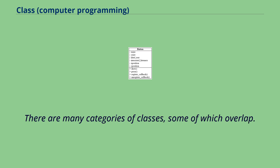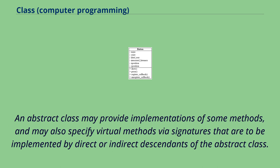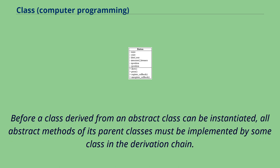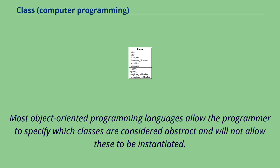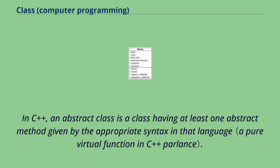There are many categories of classes, some of which overlap. In a language that supports inheritance, an abstract class or abstract base class is a class that cannot be instantiated because it is either labeled as abstract or it simply specifies abstract methods. An abstract class may provide implementations of some methods and may also specify virtual methods via signatures that are to be implemented by direct or indirect descendants. Before a class derived from an abstract class can be instantiated, all abstract methods of its parent classes must be implemented. Most object-oriented programming languages allow the programmer to specify which classes are considered abstract. For example, in Java, C#, and PHP, the keyword 'abstract' is used.